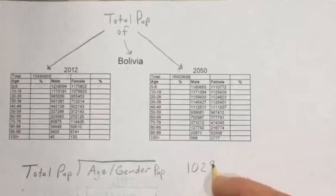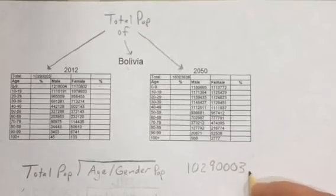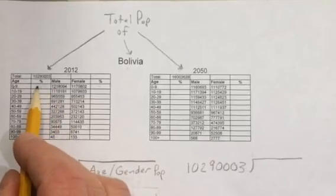Zero, one, two, nine, zero, zero, zero, three. And we're going to divide it into that number right there to find that percentage.